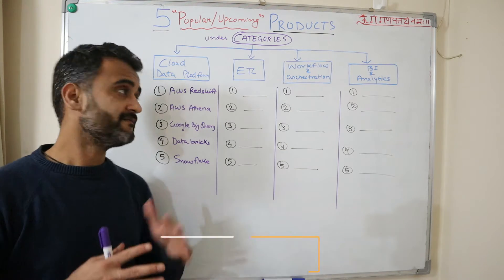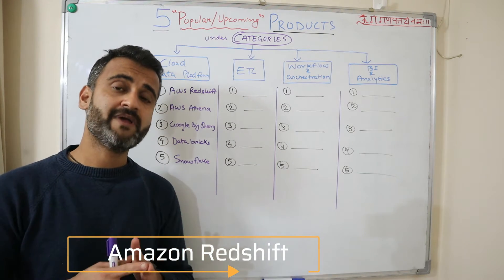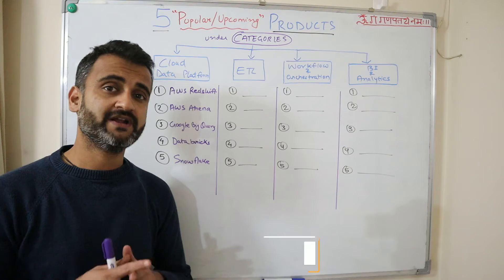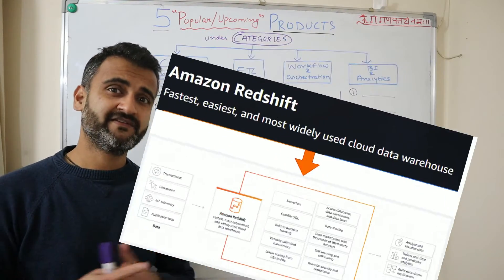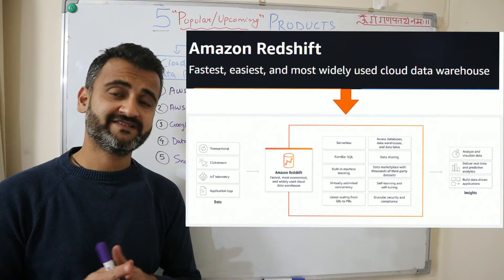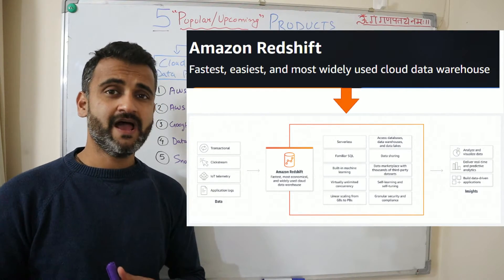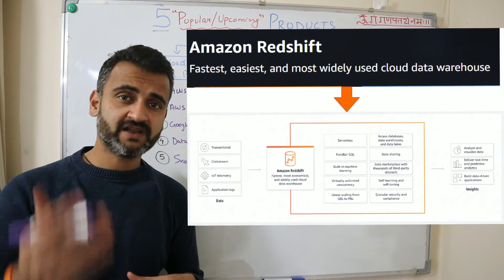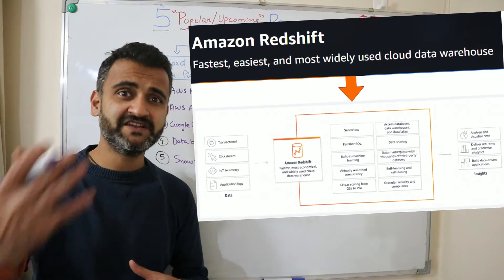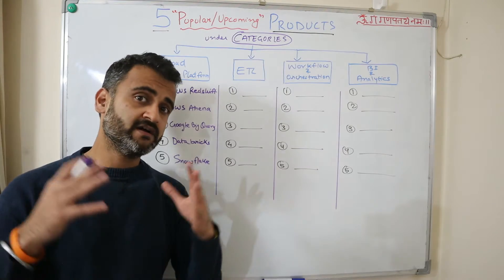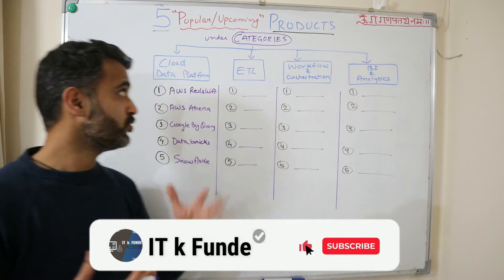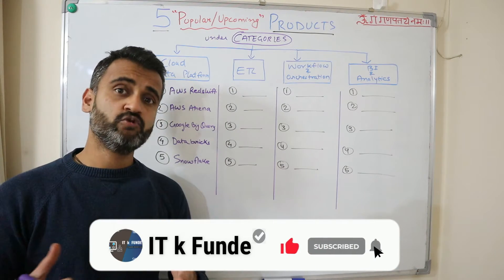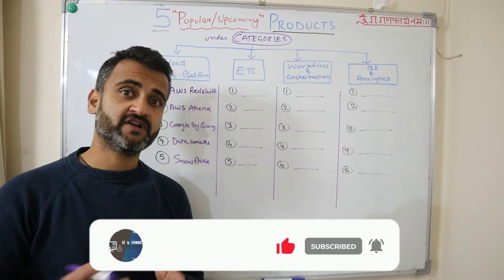Amazon Redshift is the first one on our list and it is a fully managed data warehouse solution provided by Amazon. It supports massive data loads, it supports massive data sets, complex queries and joins, and for this you need to set up clusters on AWS. It needs initial setup to be done and it is very famous. If you want to store data on the cloud, AWS Redshift is one of the products to look for.